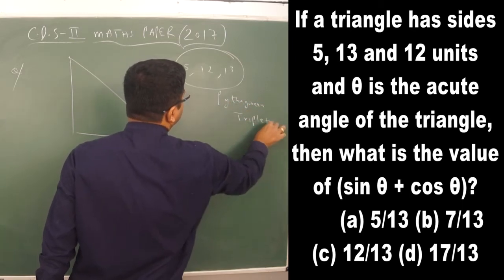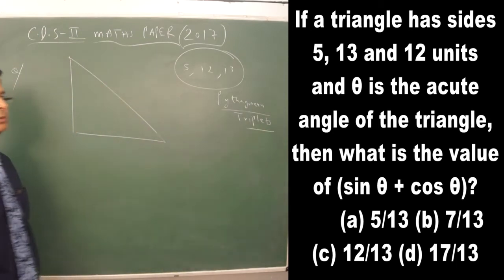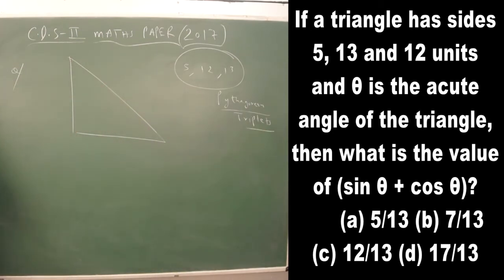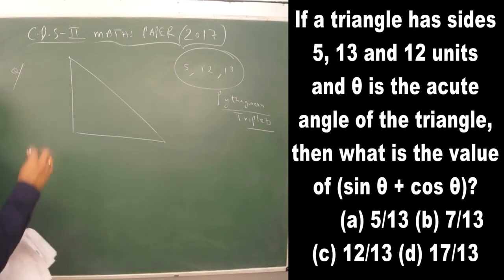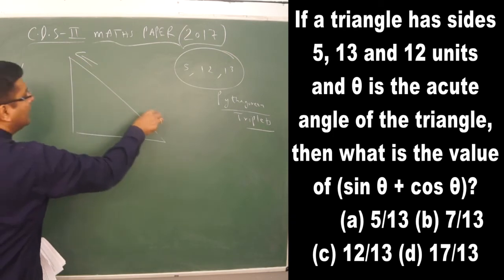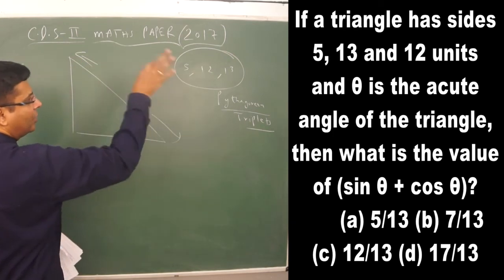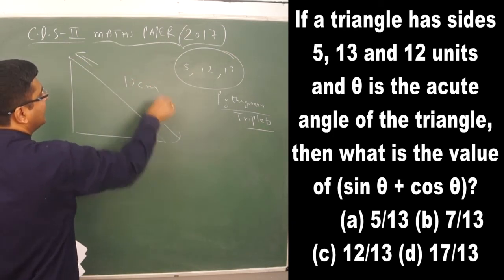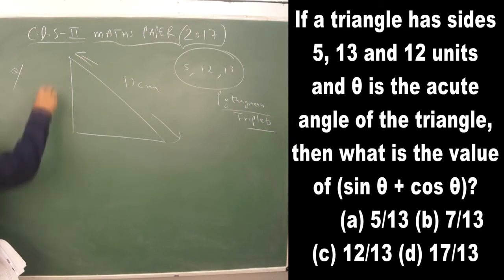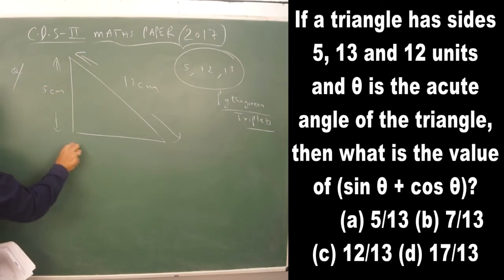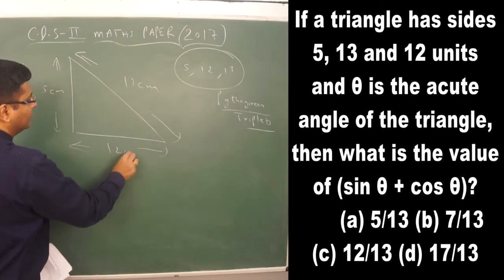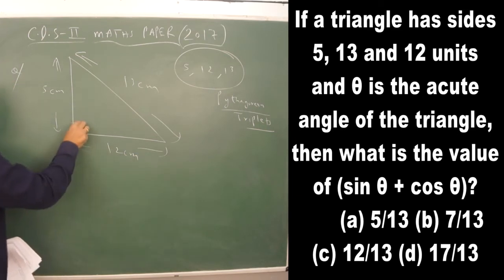Pythagorean triplets are the sides which are only possible for a right angle triangle. Out of the three given sides, the longest side is 13, which acts as the hypotenuse, and the other two sides are respectively the perpendicular and base.